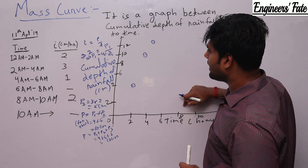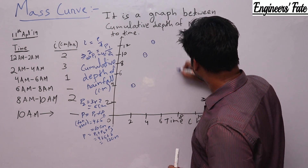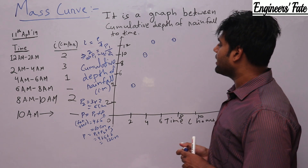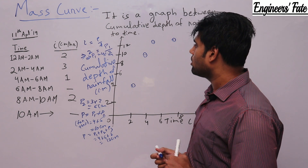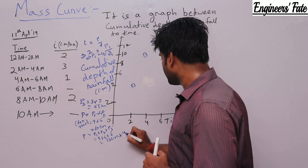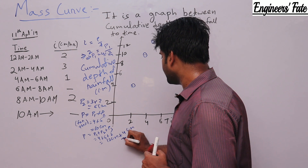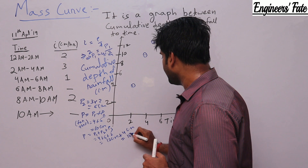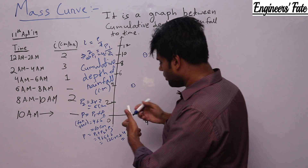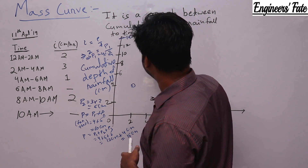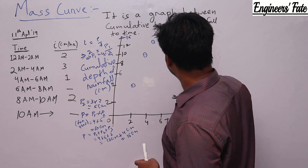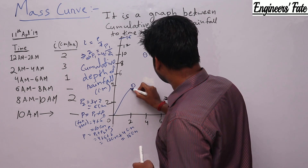From 6 to 8 am there is no rainfall, so the cumulative depth remains 12 cm — giving a horizontal (flat) line. From 8 to 10 am, intensity is 2 cm/hr so P4 = 4 cm, making cumulative depth 16 cm. The coordinate at 10 hours is 16 cm. Joining these points gives the mass curve.